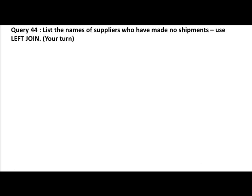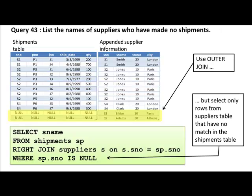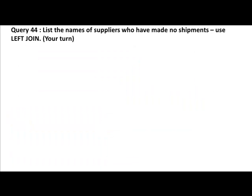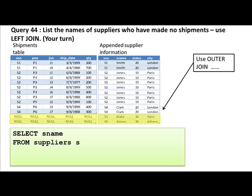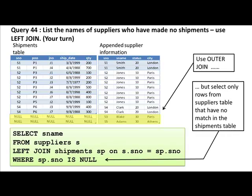The same question: list the names of suppliers who have not made any shipments — this time using a left join. Earlier we used a right join; now change it around to use a left join. This time we say FROM suppliers S because we want to use a left join, and the table from which everything needs to appear should be on the left. Suppliers is the table we want all of, so we put that on the left, then do everything else just as before. To get a left join, all we have to do is change the order of the tables — put suppliers first and shipments later.